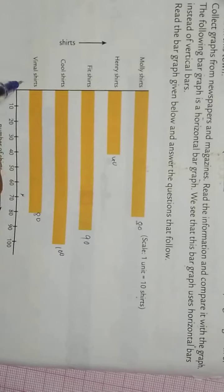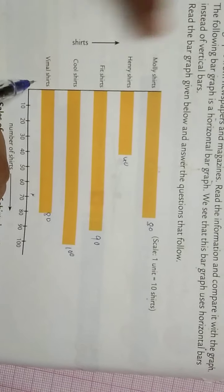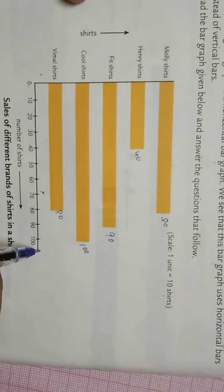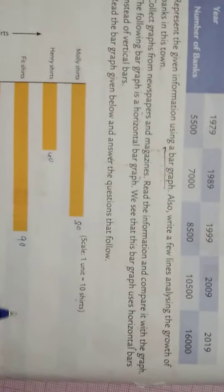The bars are drawn in a horizontal way. On the y-axis, we are representing the items, and the scale is marked on the x-axis. This method of drawing is known as horizontal bars.